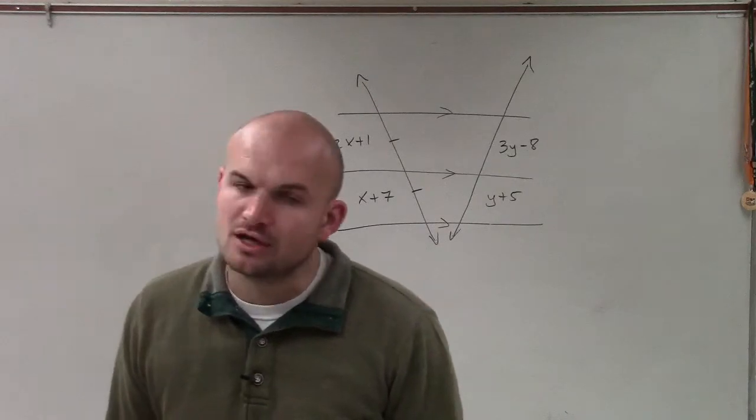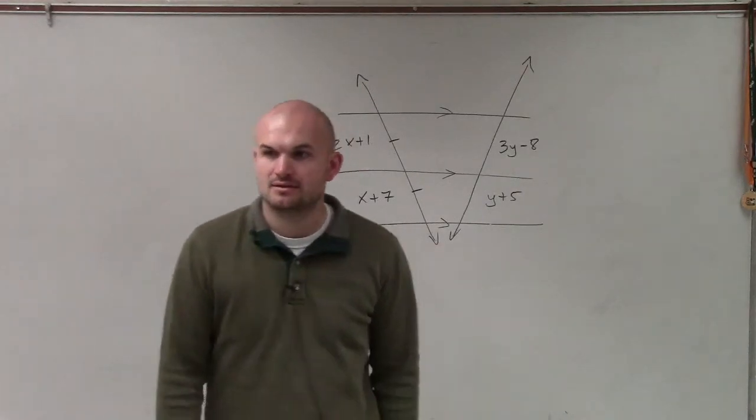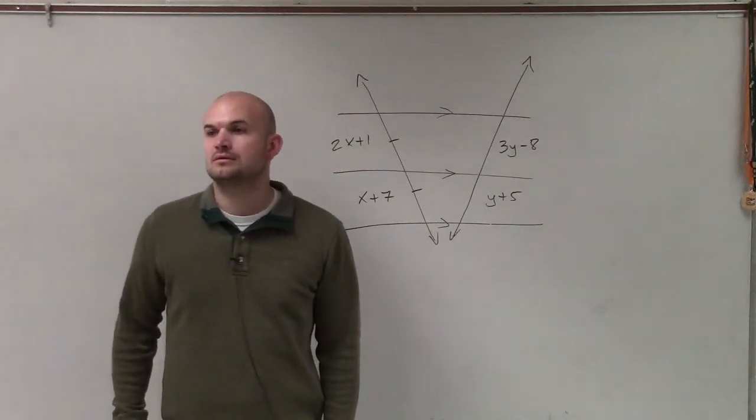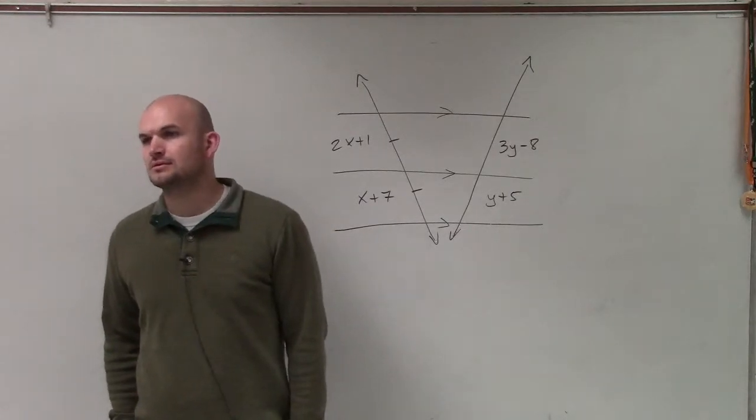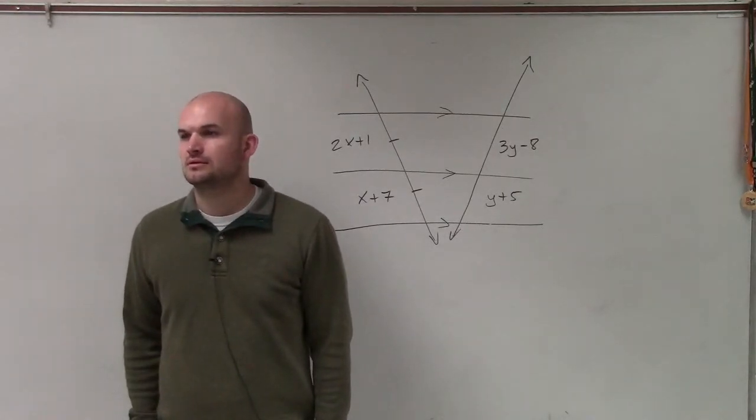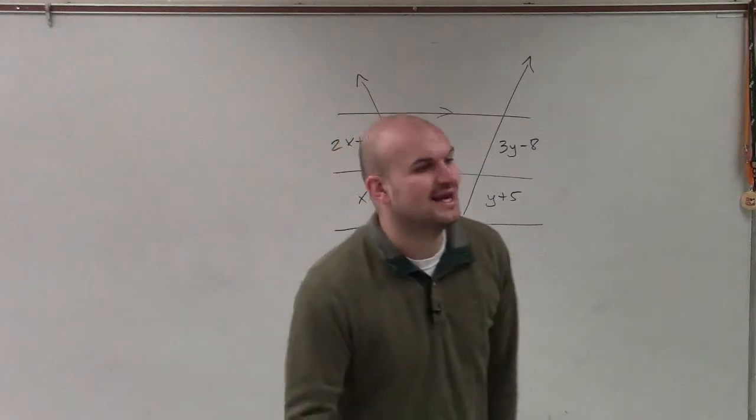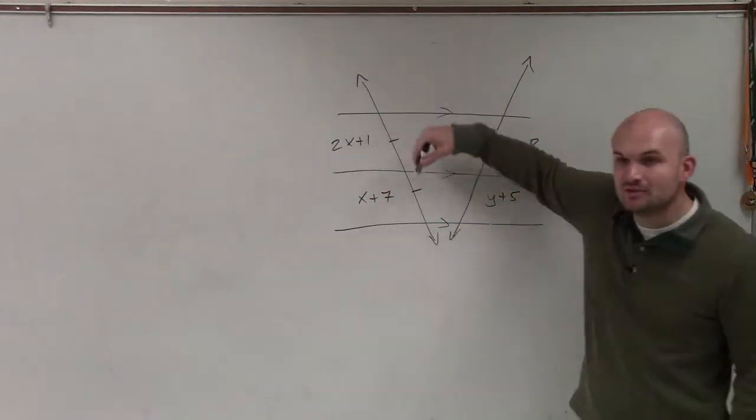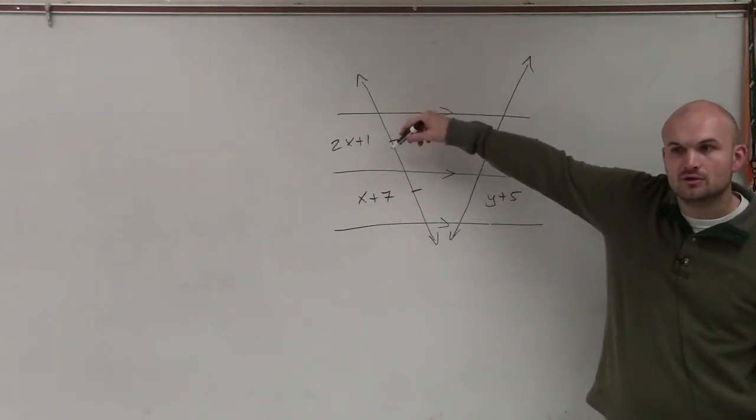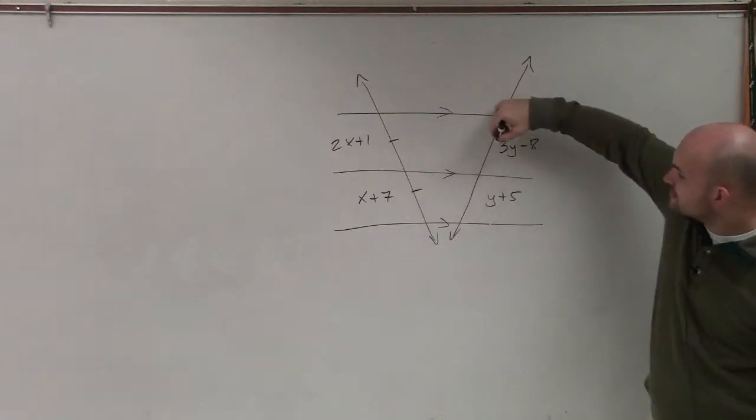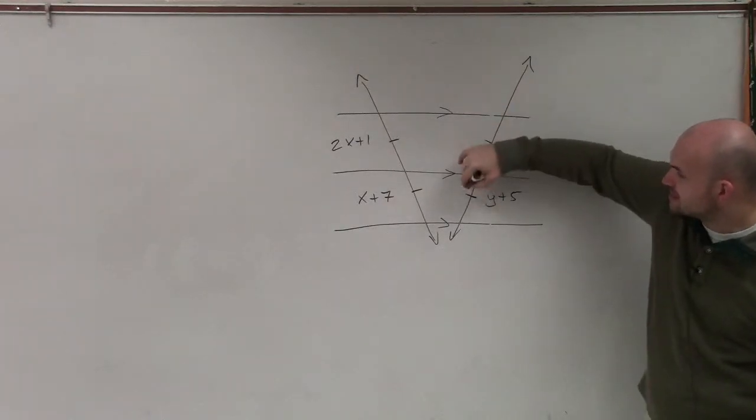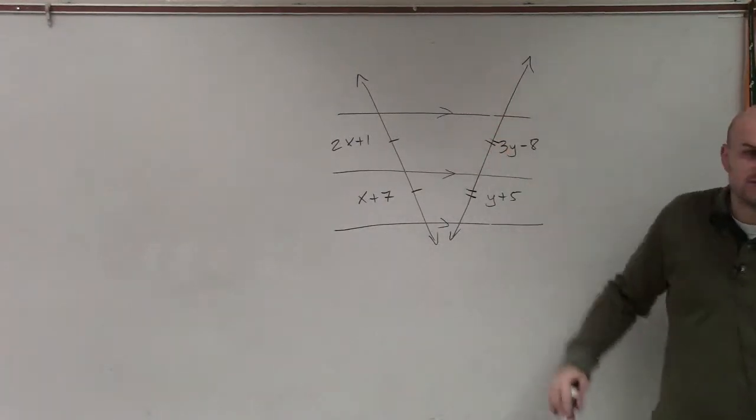And what congruent parts of parallel lines stated was that if these two lines were equal in measurement, then guess what? These two lines were also going to be equal.